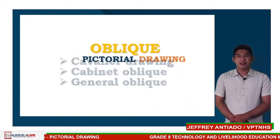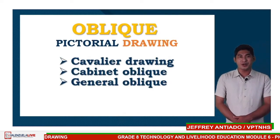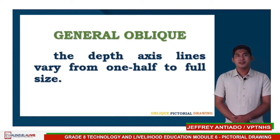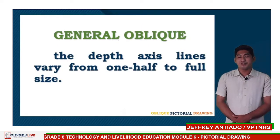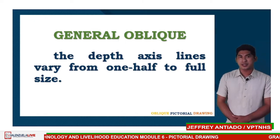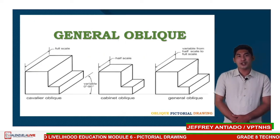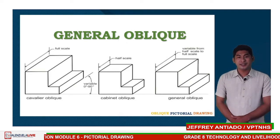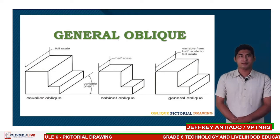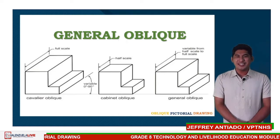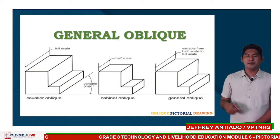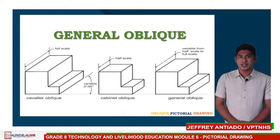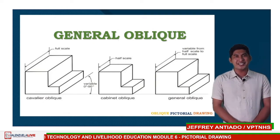Let's proceed now to the third oblique pictorial drawing, which is the general oblique. The depth axis lines vary from one-half to full size, meaning this general oblique falls in the middle of cavalier and the cabinet oblique. Here is the picture of a general oblique. This general oblique can actually be at half or full size, but normally it is in the middle of the two.